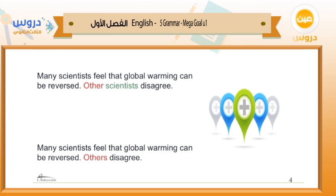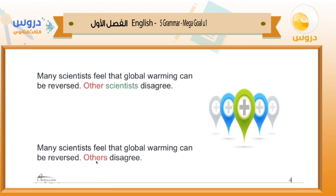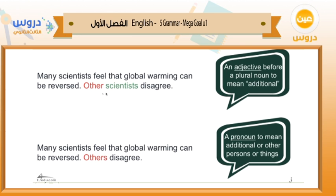Look at these sentences: Number one — 'Many scientists feel that global warming can be reversed. Other scientists disagree.' Number two — 'Many scientists feel that global warming can be reversed. Others disagree.' We have two sentences: the first uses 'other' and the second uses 'others.' In the first sentence, 'other scientists' — here 'other' is an adjective which comes before a noun. 'Other scientists disagree' — 'other' comes before the noun to describe it, meaning additional scientists.